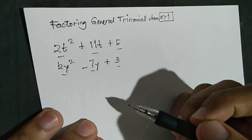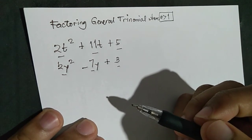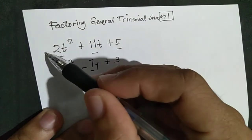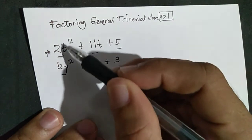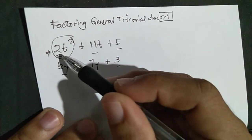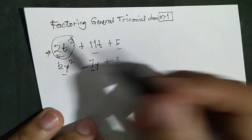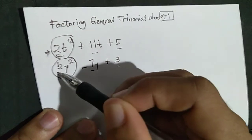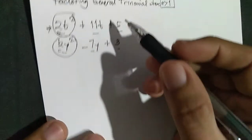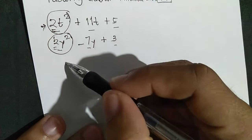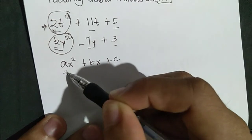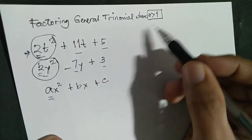The second condition: the numerical coefficient of the leading term is greater than 1. The leading term for this polynomial is 2, so A equals 2, which is greater than 1. Another example also has A equal to 2, greater than 1. Our standard form is AX squared plus BX plus C, and our A is greater than 1.